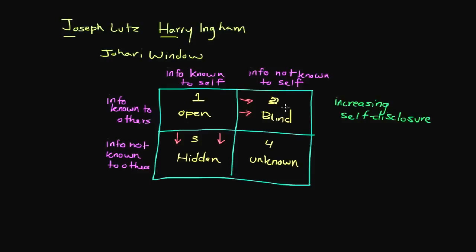And the way that we reduce kind of this blind area, the area that we don't know about ourselves, but others do is through soliciting feedback. So by essentially asking people kind of what their perceptions of us are, by soliciting that feedback so we can get a better understanding of ourselves, we would essentially reduce this blind area and make it so the open area is a little larger.